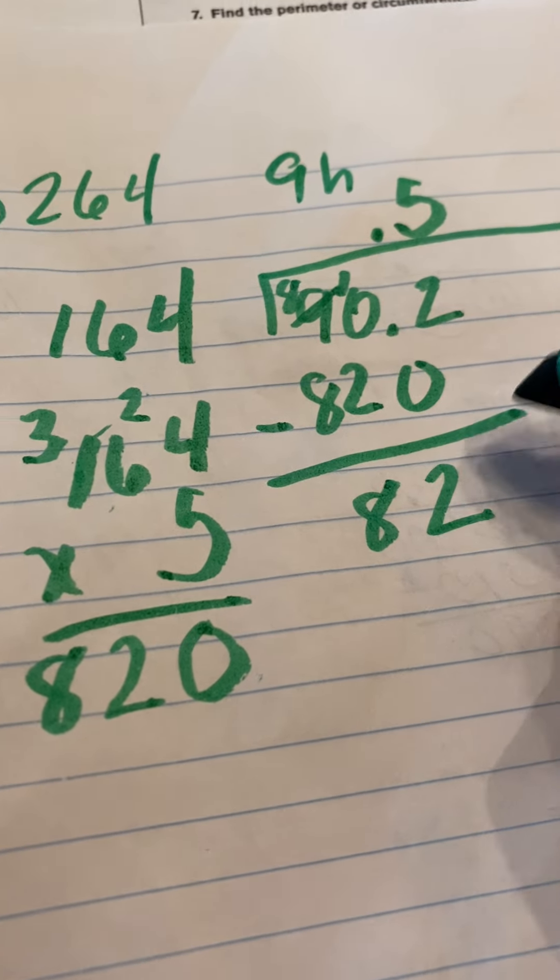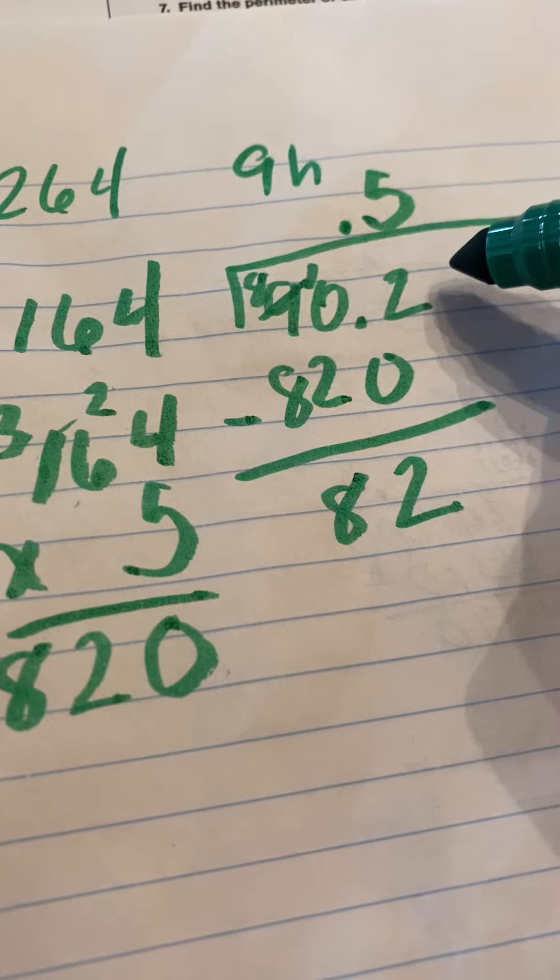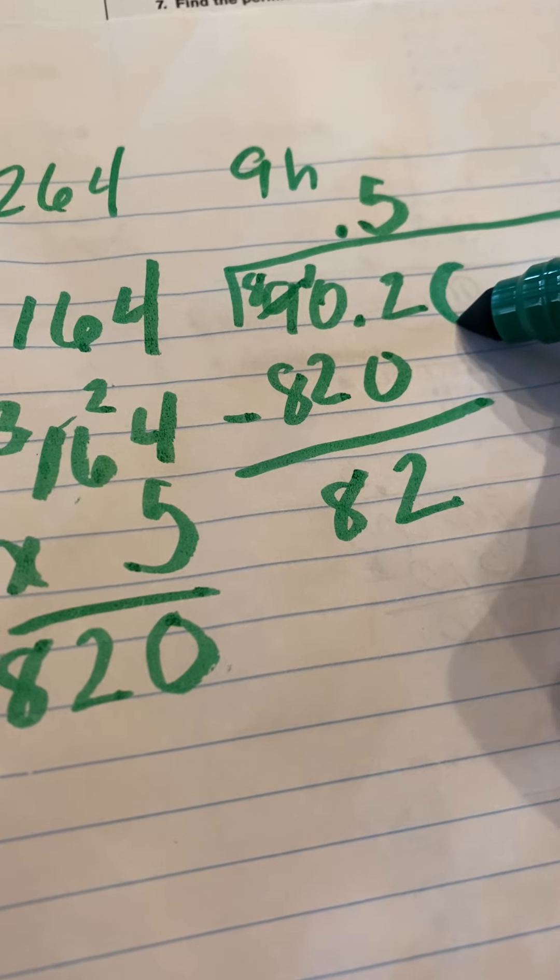So 10, 9, 8. And then 8 minus 8 is, of course, 0. So perfect.